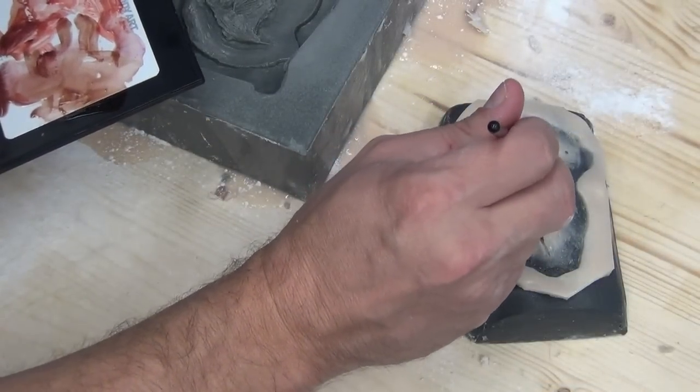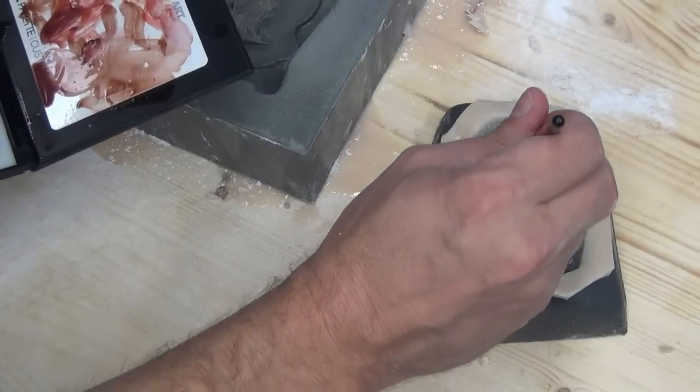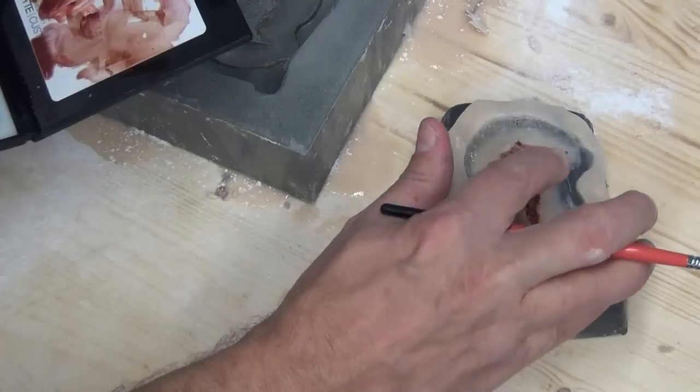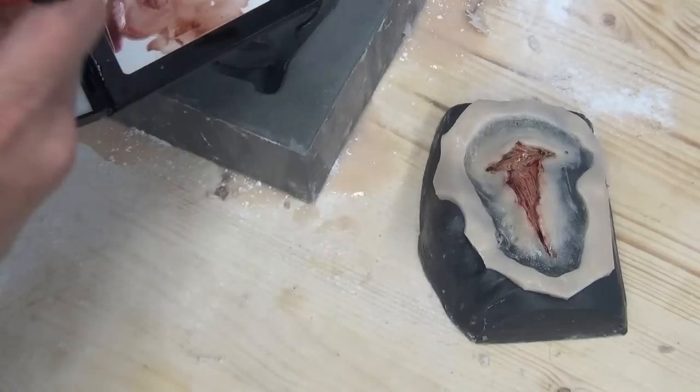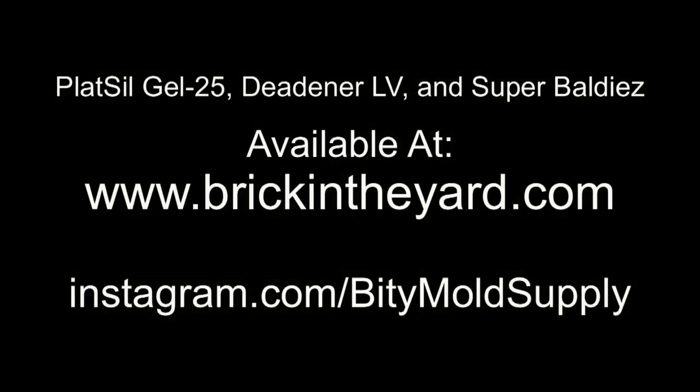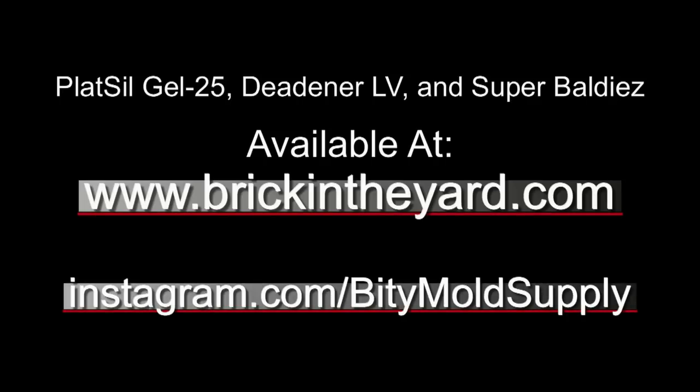That's how you cast an encapsulated silicone prosthetic. This Plat Sil Gel 25 prosthetic can now be pre-painted with alcohol colors and will be ready to apply to our subject. Stay tuned for the follow-up video where we'll be applying this to our subject, blending it in, and adding blood. For those new to our products and information, all our products and videos are available at brickintheyard.com. Follow us on Instagram at instagram.com/bittymoldsupply. Thanks for watching, and stay tuned for part four.